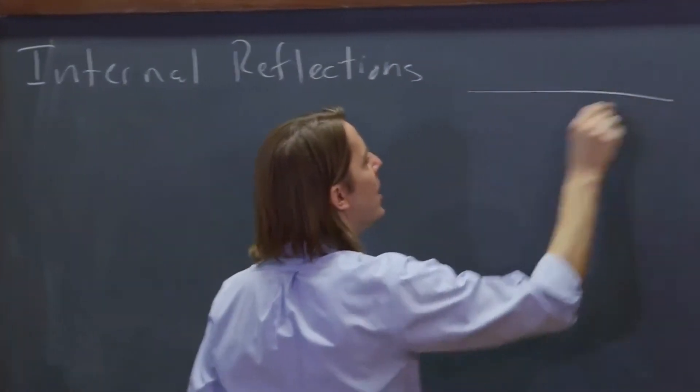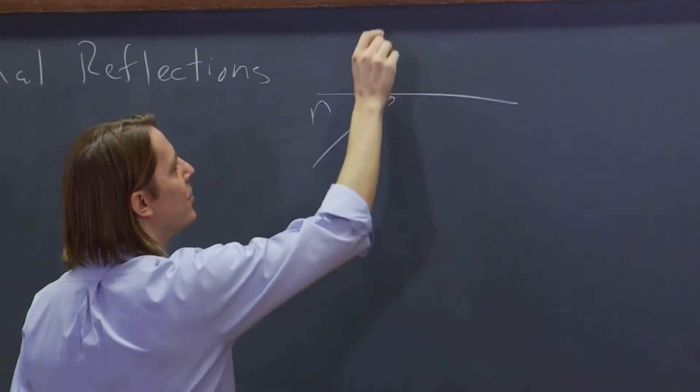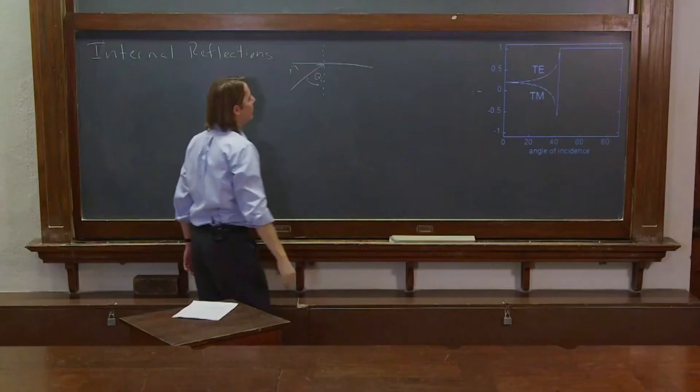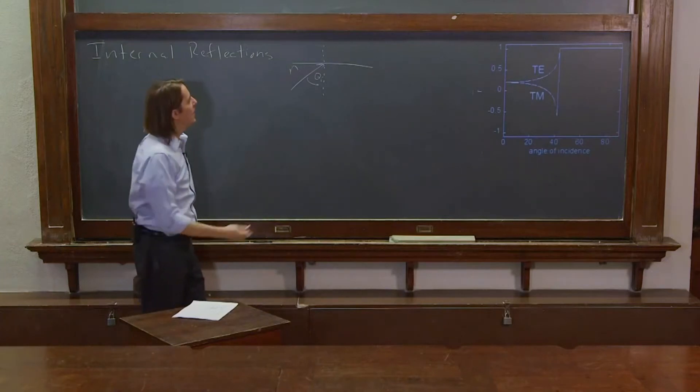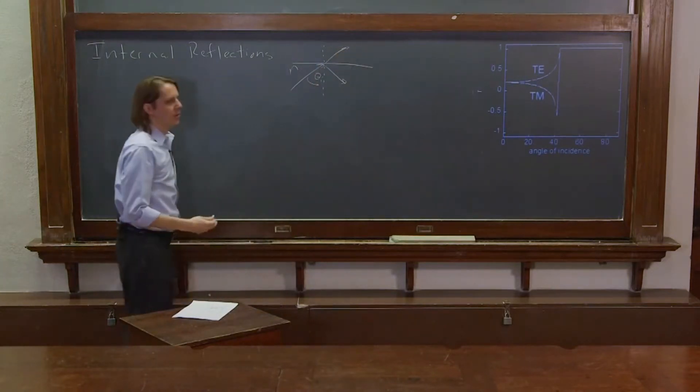So this is the case where you have a medium at some index n, and the light comes in from inside at some angle theta incident, and you just want to think about how much is reflected and how much is transmitted.